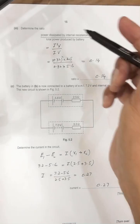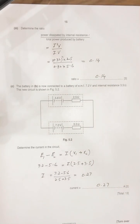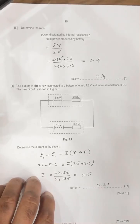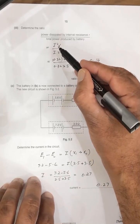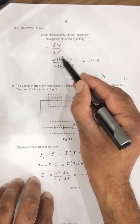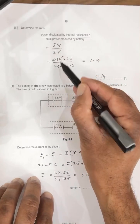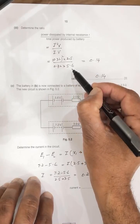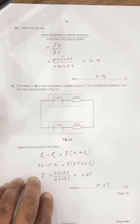Next, we have to determine the ratio of power dissipated internal resistance divided by power produced by the battery. So power across the internal resistance is I square R and power total IV. So I square R into R 2.5 divided by I into total potential 5. So it is 0.14. So this is the ratio.